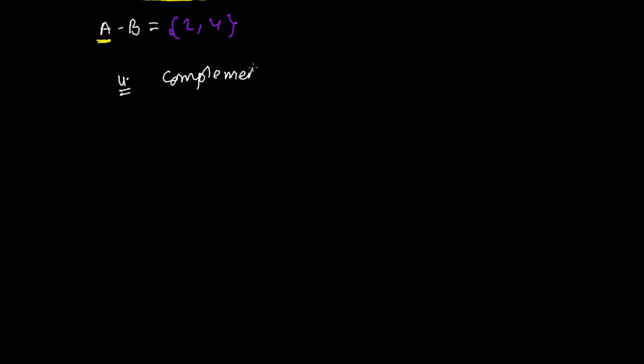So complement operation is something like this. First I am going to draw a diagram, a Venn diagram, and here I have a set A suppose, just A, now this is U.